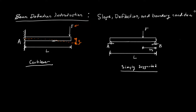For a cantilevered beam, it's going to be fixed at the left support. It can't rotate, and it also can't translate up or down. With some loading, it's going to be bending. For most cantilevered beams, we're going to have our maximum deflection at the end of the beam, if all our loads are going in the same direction.